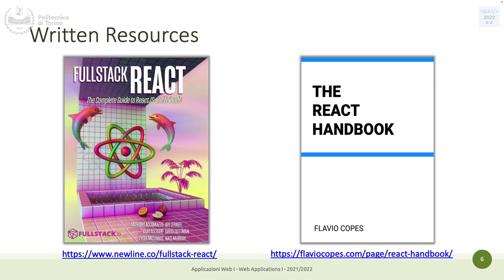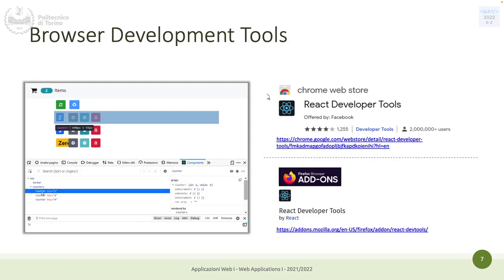Another important thing you need to install are the browser development tools for React. This is a browser developer tool available for both Chrome and Firefox. They were linked in the introductory slides of the course already. These are developer tools specifically for React — instead of the regular browser inspector, they add another layer just for React. Pick one — whichever you prefer — and install it. It's a free plugin.